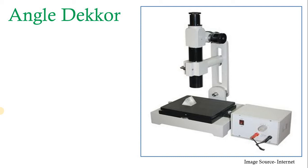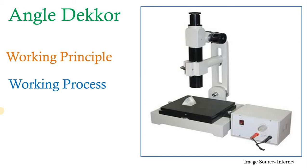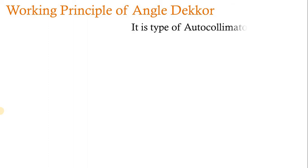The angle decker acts as a type of autocollimator — it is an optical instrument. In this session we are going to see how the angle is measured and how small deviations in angular measurement can be done using the angle decker. We will cover the working principle, working process, and applications of the angle decker. Please subscribe to the channel and click the bell icon to get more notifications.